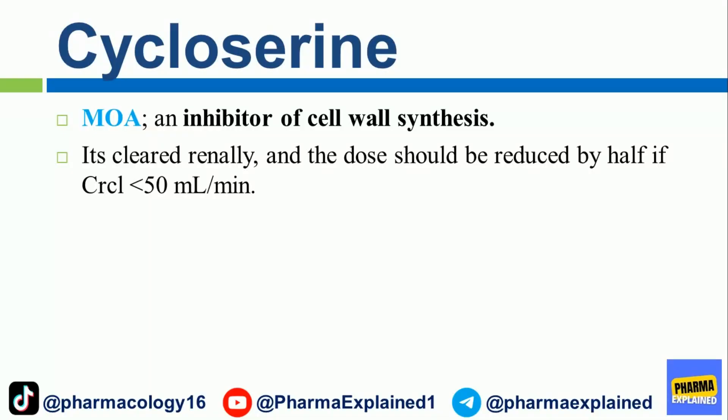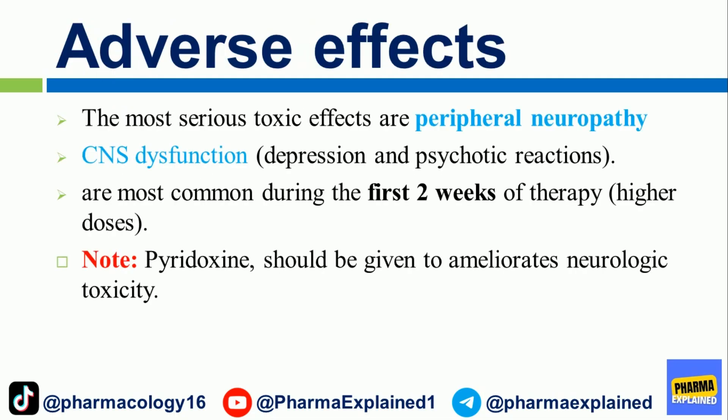Cycloserine mechanism of action: It is an inhibitor of cell wall synthesis. It is cleared renally and the dose should be reduced by half if CrCl is less than 50 mL/min. Adverse effects: The most serious toxic effects are peripheral neuropathy, CNS dysfunction, depression, and psychotic reactions, most common during the first two weeks of therapy at higher doses. Pyridoxine should be given to ameliorate neurologic toxicity.